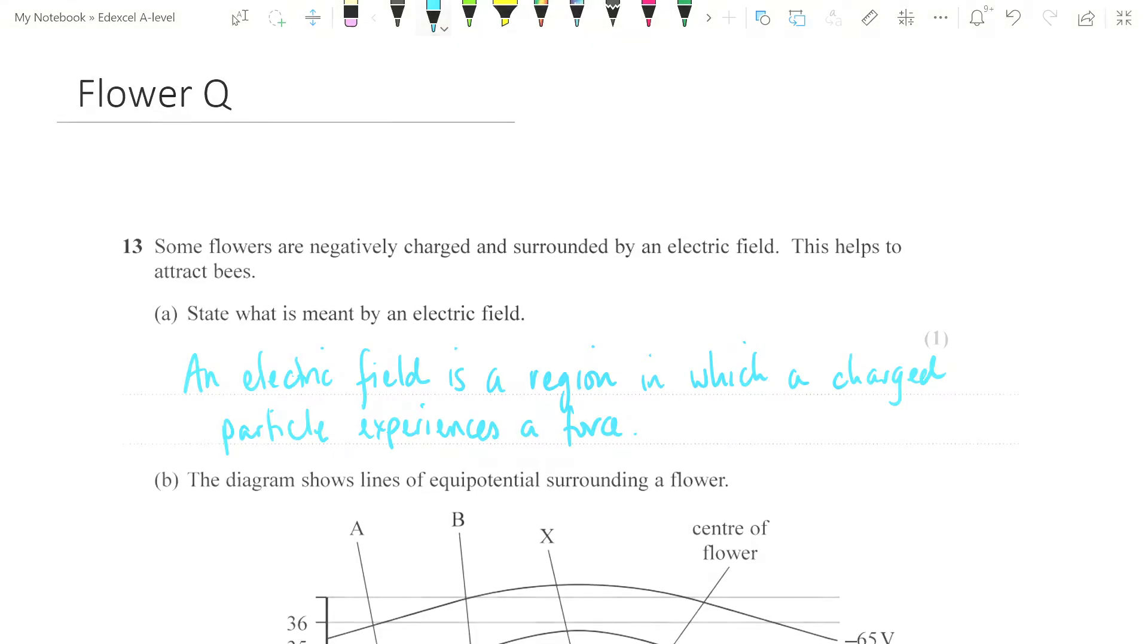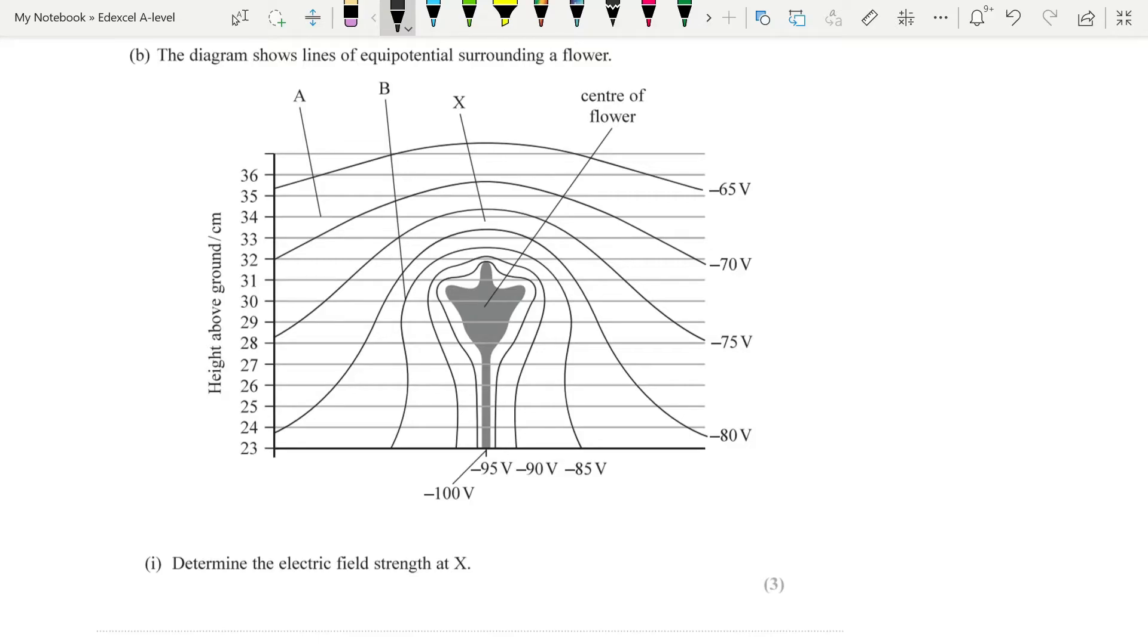The real kicker came with the next part. The diagram shows lines of equipotential surrounding a flower. Determine the electric field strength at x. Now this threw a lot of people, mostly because we are used to looking at very even radial fields or fields between plates. And people get thrown off when there is an odd context, like the flower, and then when the fields are not following the lines that they think they should be following. But, remembering we have three equations for electric field strength, e is equal to f over q, e is equal to kq1 over r squared, and e is equal to v over d.